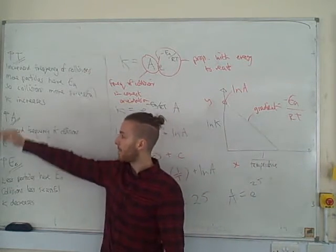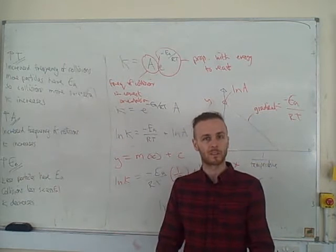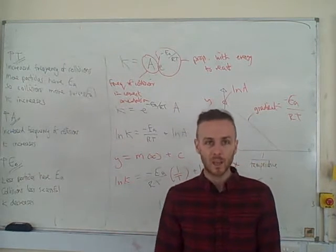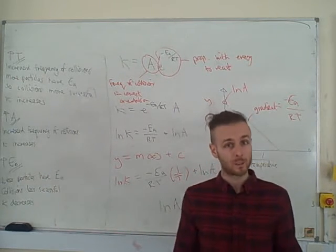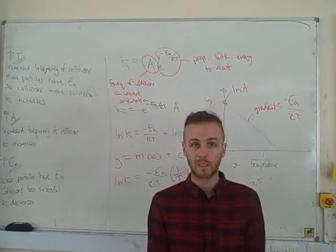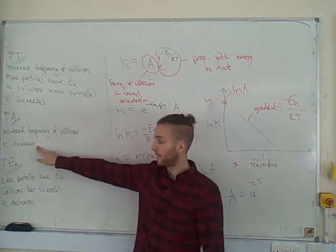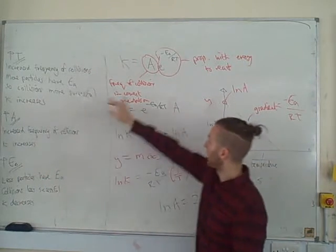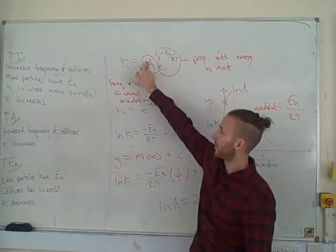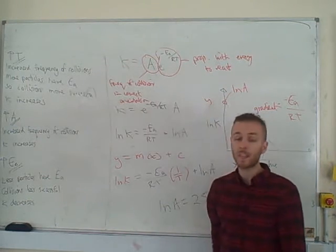We've also got our term A here. Well, A talks about the frequency of the collisions. So if you increase A, you are increasing the frequency of collisions. And again, if your particles are colliding more frequently, you're going to get more reactions. So as A increases, k increases, which makes sense if you think about it in terms of maths. If you increase that term, that term must also increase.